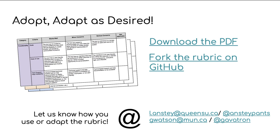That quick orientation to the rubric should give you a sense of how you could use it to evaluate any e-learning tool you're considering adopting. Work through the rubric to evaluate how a specific tool measures up against what's represented. The rubric is Creative Commons licensed, so others are free to adopt and adapt it. You can download the PDF, or access it on GitHub to make changes for yourself or your institution. Our contact information — both Gavin's and mine — is on the screen, and we'd love to hear from you when you're using or adapting it.